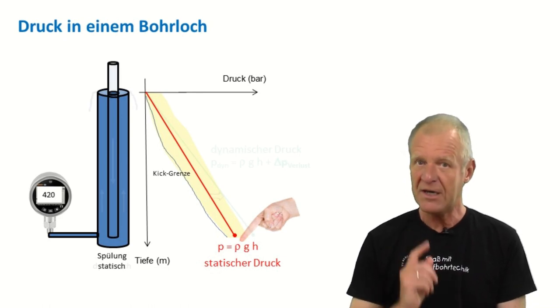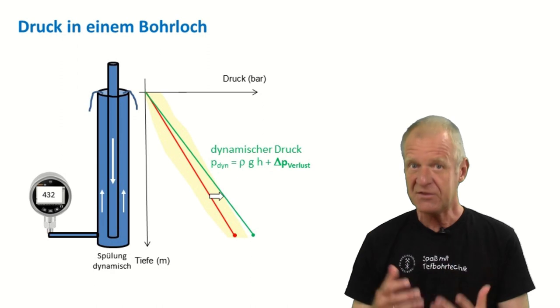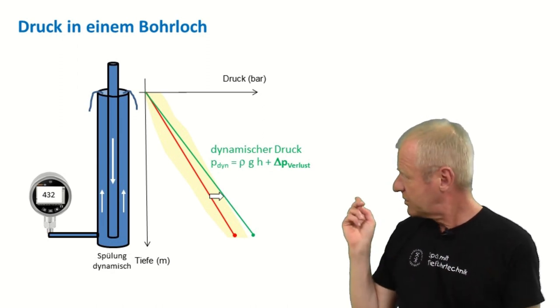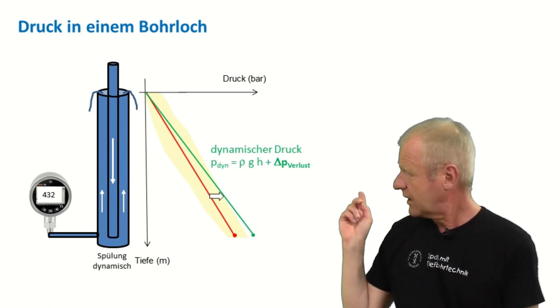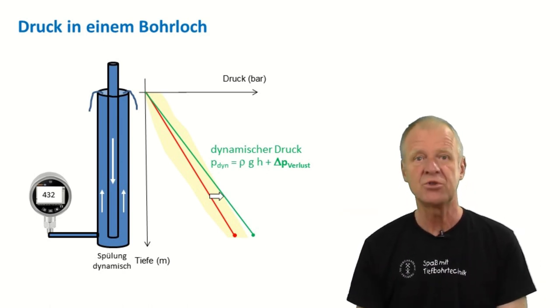But when we switch on the pumps and the mud flows, then the pressure in the borehole increases as the dynamic pressure acts in addition to the static pressure component. It's therefore important that we also know the proportion of this dynamic pressure in the borehole.